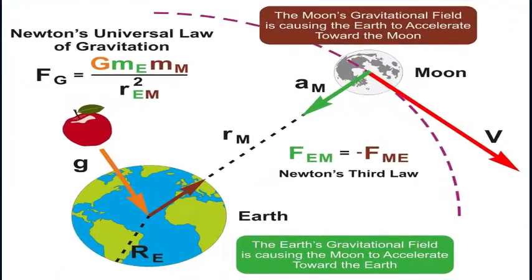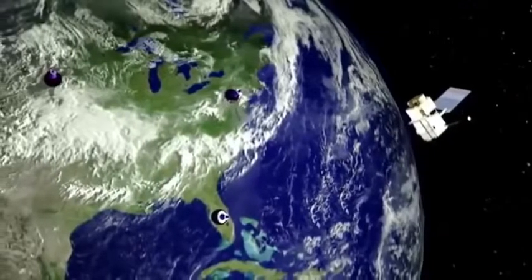Moon is also attracted by earth. But why doesn't moon fall on earth? The reason behind this is moon is revolving around the earth. If moon stops revolving, it will fall on earth.